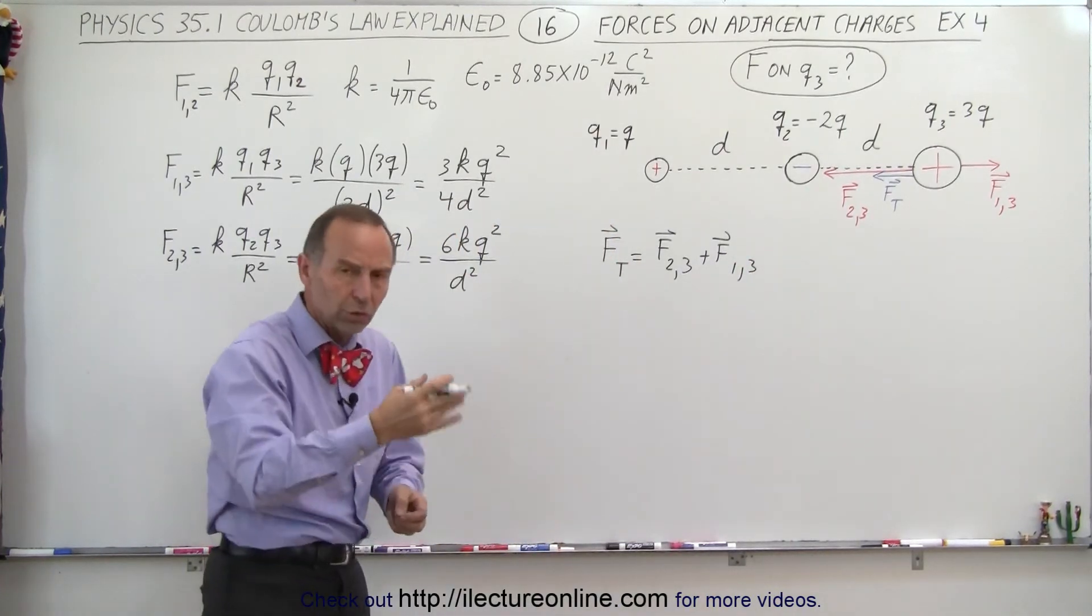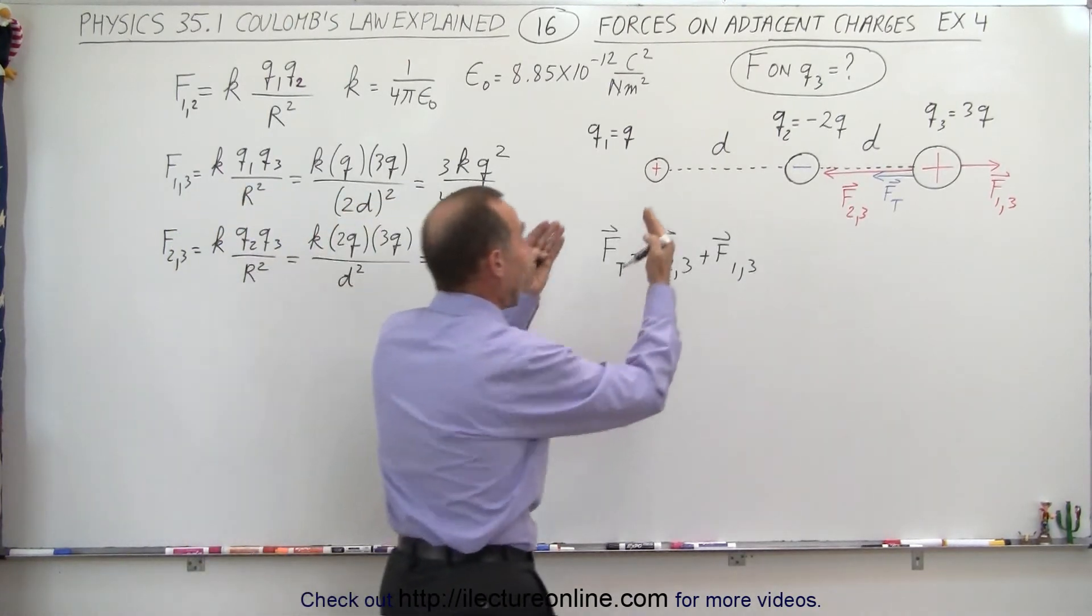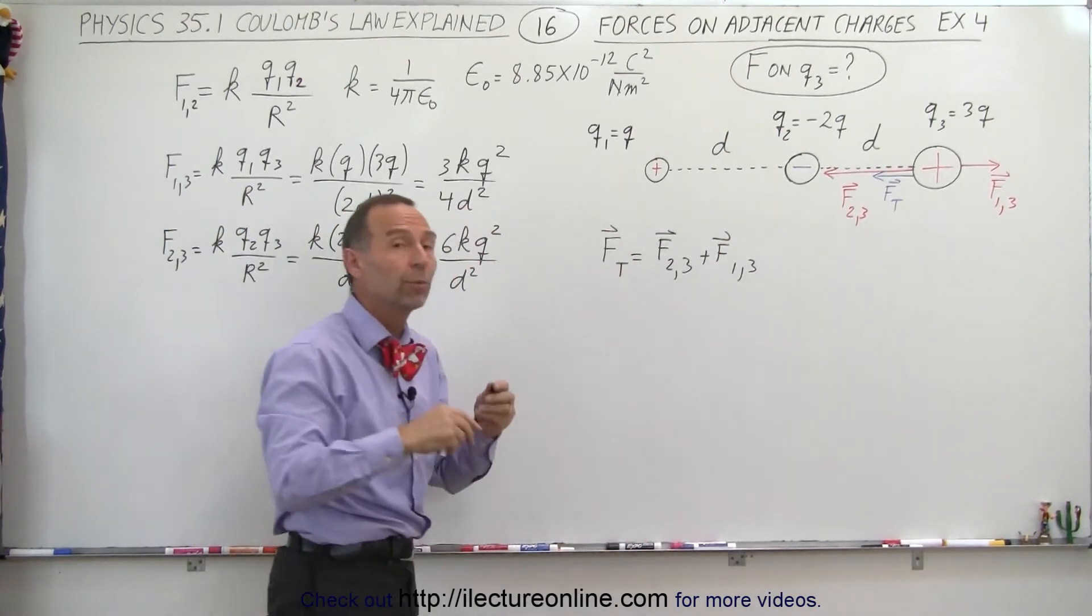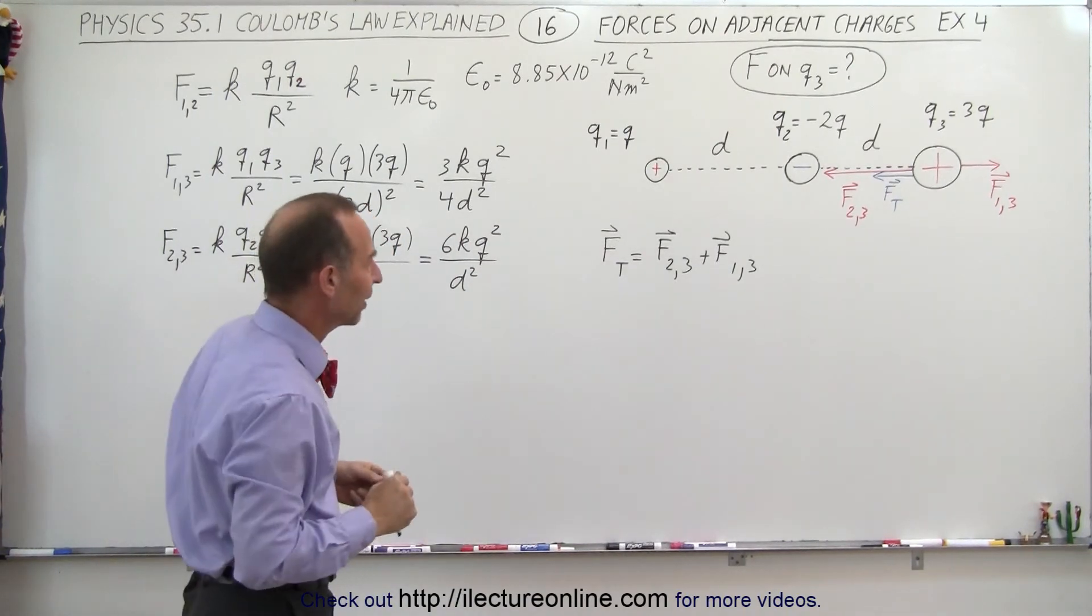And again, you might have described, well, wait a minute, isn't 2,3 pointing to the left side? And yes, it is, but that will take care of itself. Here we're simply adding two vectors together, regardless of where they're pointing. Once we plug in what these are equal to, then we worry about the negative sign.